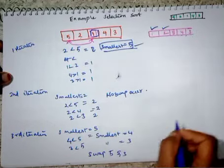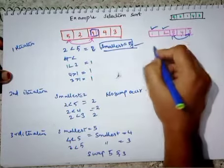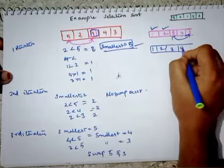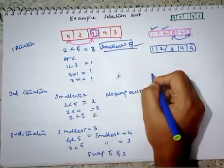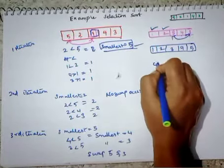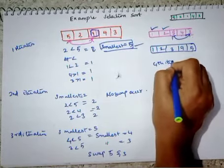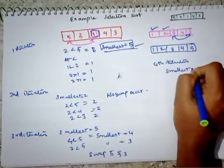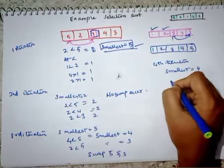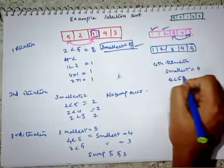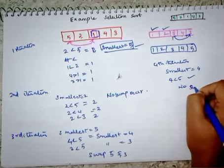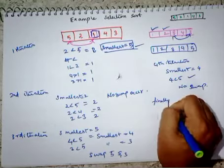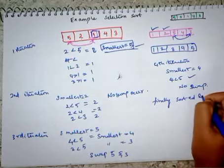We swap five and three. In place of five we put three, so the array now looks like one, two, three, four, five. In the fourth iteration, the smallest value is four. The condition checks: four is less than five — yes, so no swap occurs. Finally, the sorted list is one, two, three, four, five.